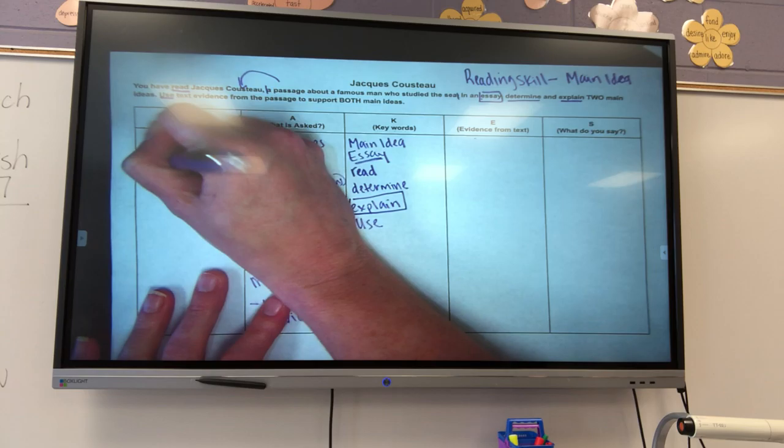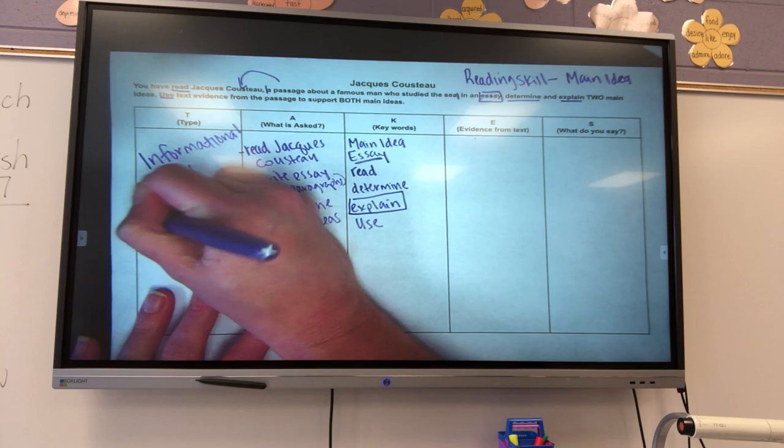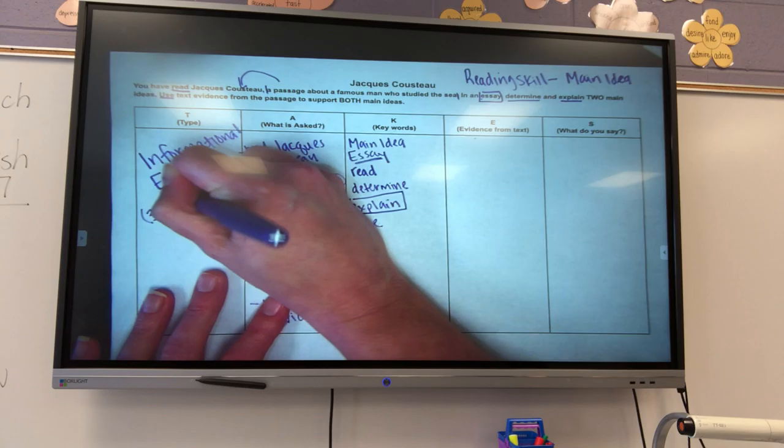Determine. Not determined. Justin? Explain. Explain. When it tells me to explain, it is wanting me to write what kind of passage? Informational. Informational.